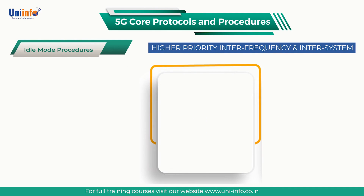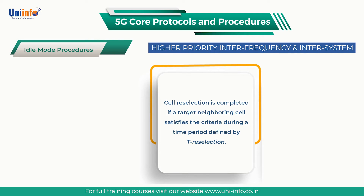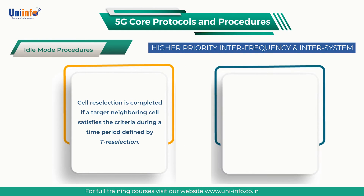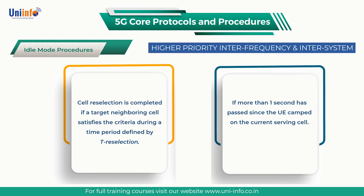Cell reselection is completed if the target cell satisfies the criteria during a time period defined by T-reselection, and if more than one second has passed since the UE camped on the current serving cell. The value of T-reselection is obtained from SIB4 when completing inter-frequency cell reselection and from SIB5 when completing inter-system cell reselection.